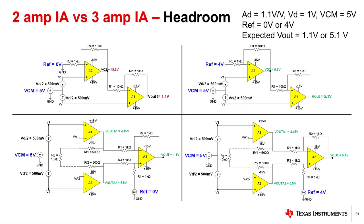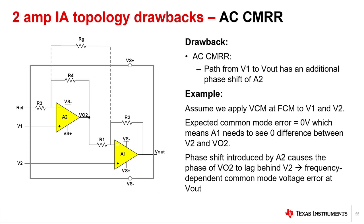Another limitation of a 2-amp IA circuit is the difficulty of achieving high AC common mode rejection. This results in poor CMRR because the signal path from V2 to Vout has the additional phase shift of amplifier A2. Assume a sinusoidal common mode voltage VCM at frequency FCM is applied to both inputs V1 and V2. Ideally, the common mode error should be 0 volts independent of frequency. For the AC common mode error to be 0, amplifier A1 must see zero instantaneous difference between the common mode voltage applied directly to V1 and the version amplified by A2. However, any phase shift introduced by A2 will cause the phase of V02 to lag behind the directly applied common mode voltage at V1. This phase difference results in an instantaneous difference and a frequency-dependent common mode voltage error at Vout.